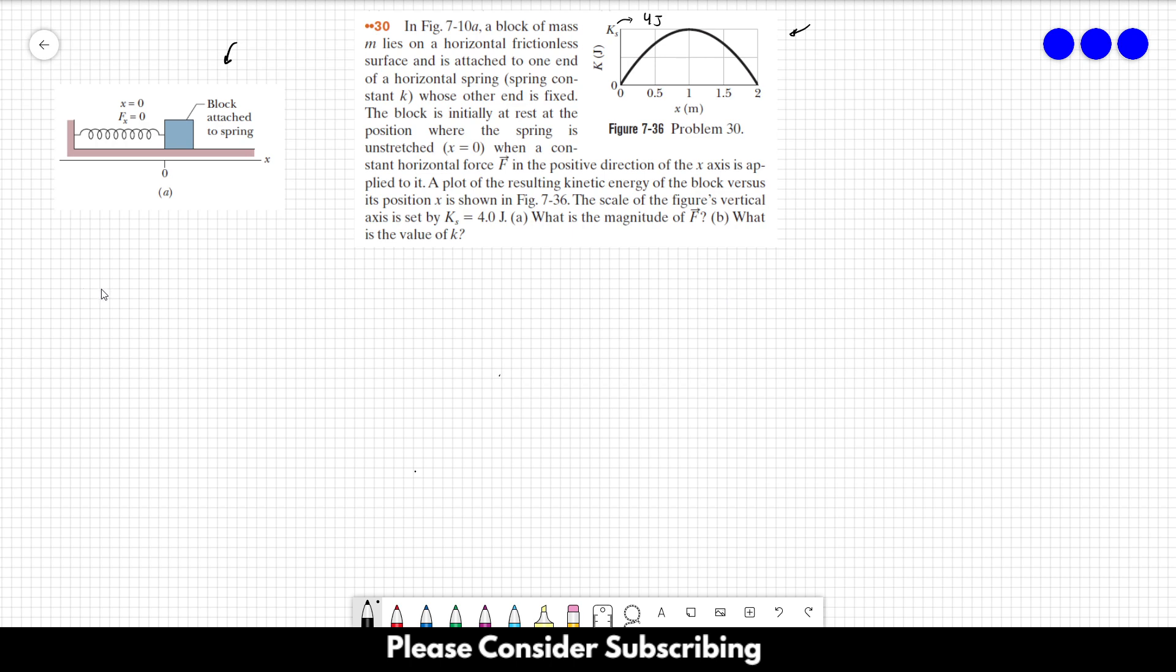So in this problem here, we're just going to use the work kinetic energy theorem. So the change in the kinetic energy that we're going to get the values from this graph over here is equal to the work done. And in this case, we have two different works that we have to take into account. One of them is the work done by the spring, and the other one is the work done by force F.